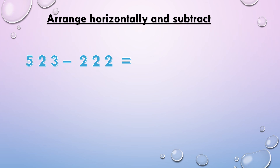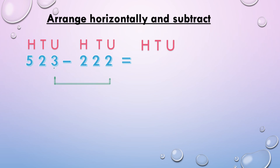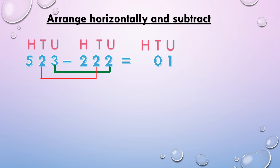Finally, 523 minus 222. We write the place values and subtract units place numbers first. 3 minus 2, we get 1. Tens place: 2 minus 2, we get 0. Hundreds place: 5 minus 2, we get 3. So 523 minus 222, we get 301.